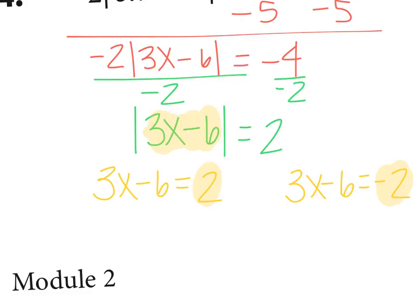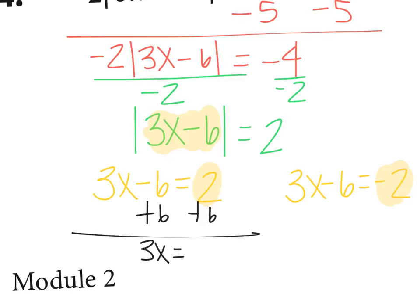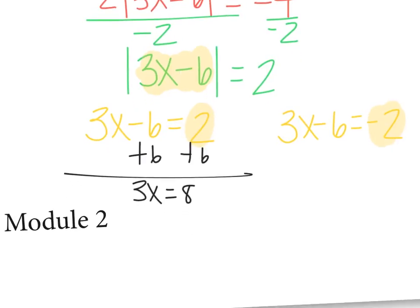We can put clean clothes in the washer — they come out positive. We can put dirty clothes in the washer — they still come out positive. And then we just solve these linear equations. Add 6 to both sides: we get 3x equals 8. Divide by 3: x equals 8 thirds.